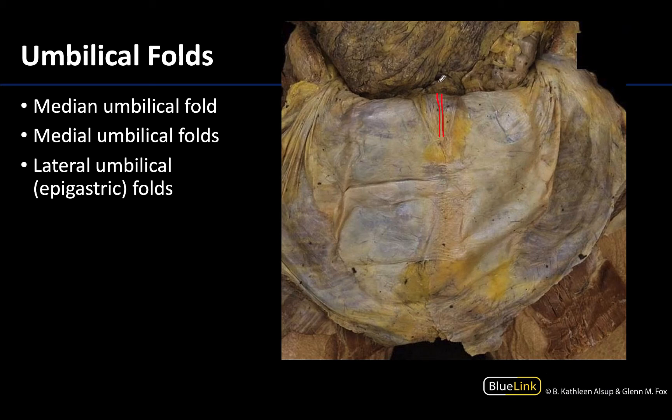The median umbilical fold is created by peritoneum covering the median umbilical ligament, which is a remnant of the fetal urachus — a connection between the apex of the bladder, which would be deep and inferior in this region, and the umbilicus. So this is an example of a developmental remnant.